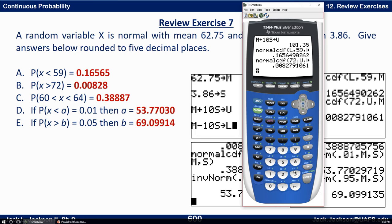For the third one, I can pull up that entry. I want to go from 60 to 64, so lower is 60, upper is 64. I need to insert the 4, then M and S, and hit enter for the probability.